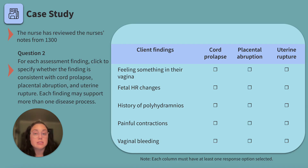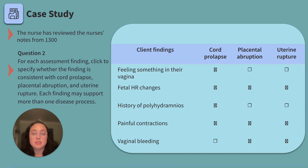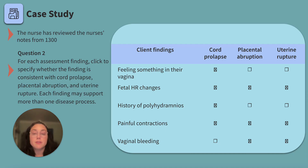Let's go through the findings. The client's report of feeling something in their vagina is consistent with cord prolapse — the client may feel the umbilical cord since it has prolapsed past the baby's head. This would be absent in placental abruption and uterine rupture. For fetal heart rate changes — bradycardia, variable decelerations, minimal variability — all three conditions could have fetal heart rate changes due to decreased blood flow to the baby.